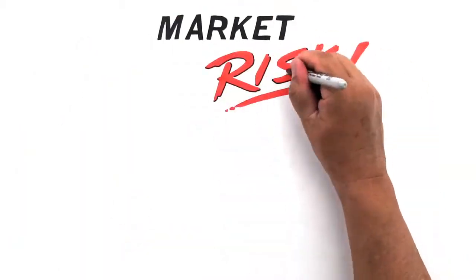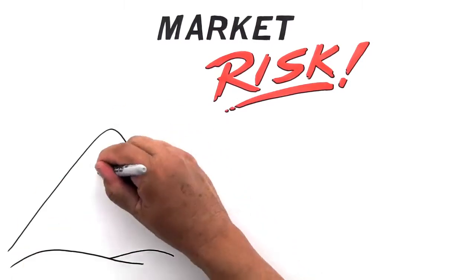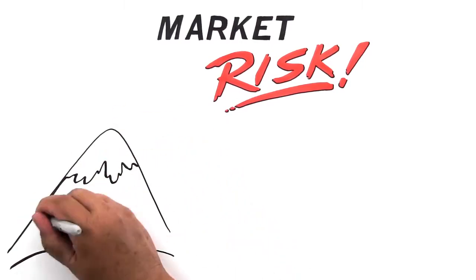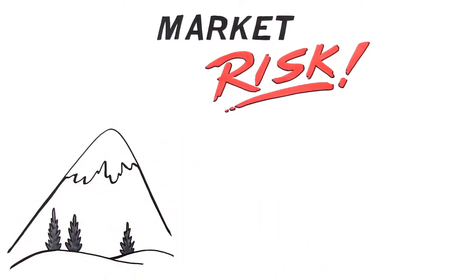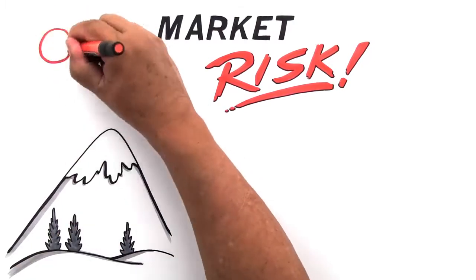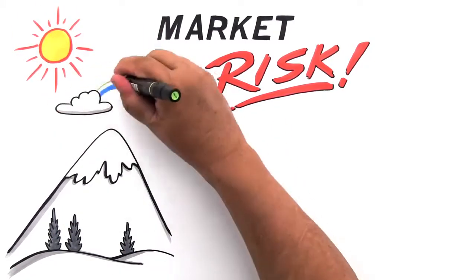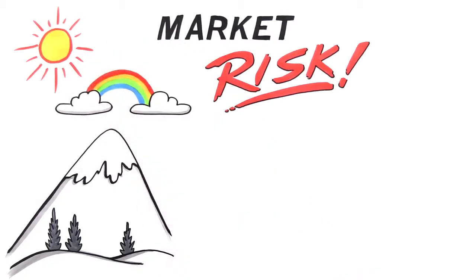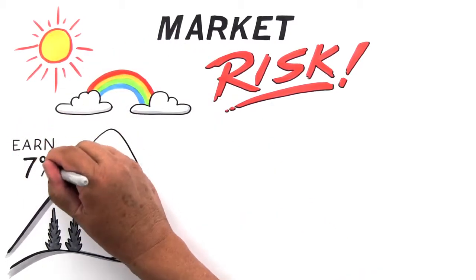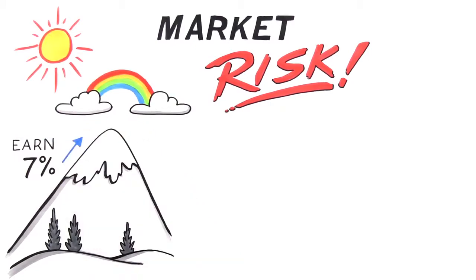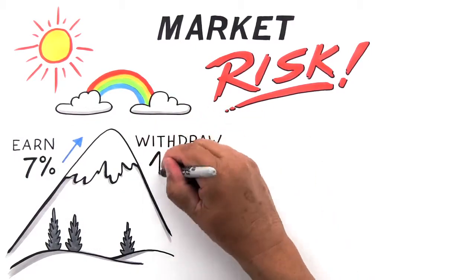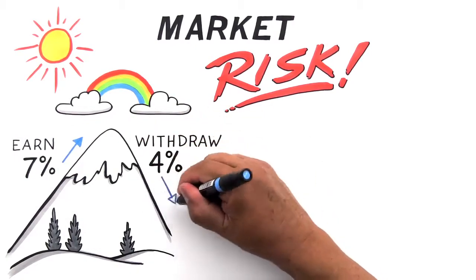These risks include market risk, the risk of volatile stock market returns wiping out all of our income streams in retirement. For example, many people believe they have saved enough money for retirement. The computer models may even show that their money will last if they can earn an average of just 7% a year while climbing up the mountain and withdraw only 4% a year while coming back down the mountain.